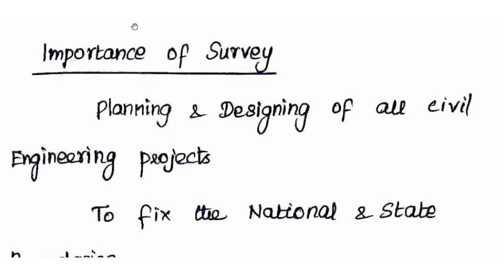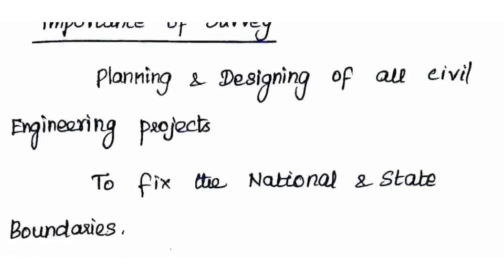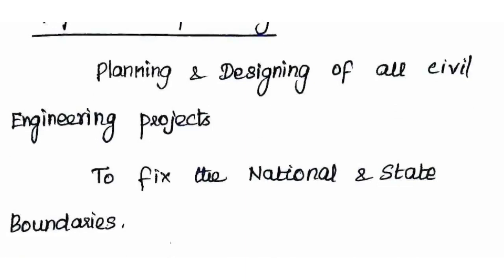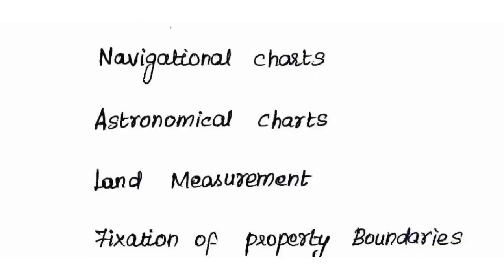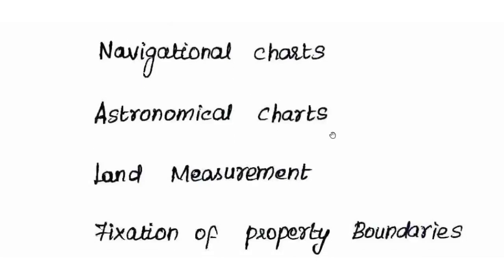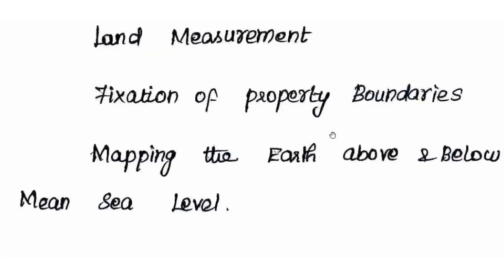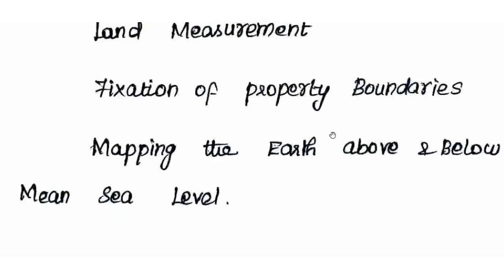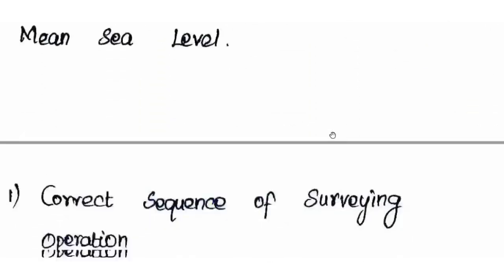Civil engineering projects that require surveying first include: town planning, buildings, highways, railways, etc. Surveying is also used to fix national and state boundaries, public and private property boundaries. Navigational charts and astronomical charts (for moon, planets, stars, sun) also rely on surveying. Other uses include fixed land measurements, fixation of property boundaries, and mapping above and below ground.